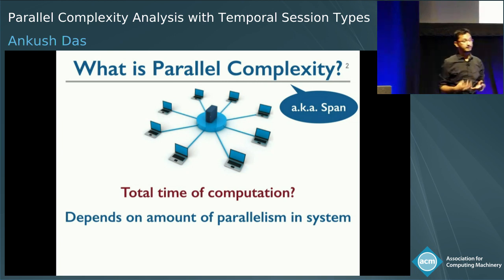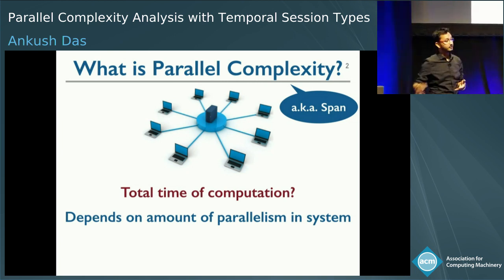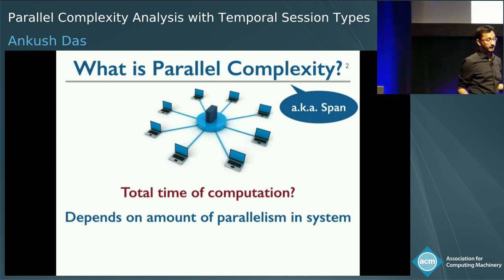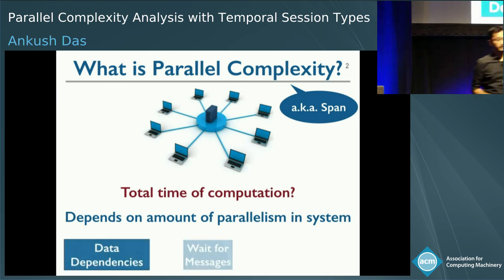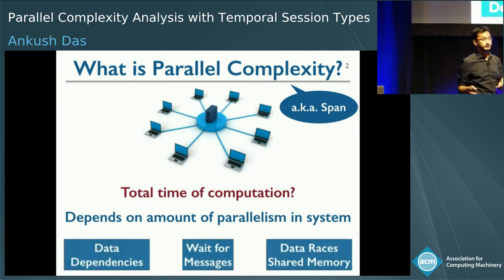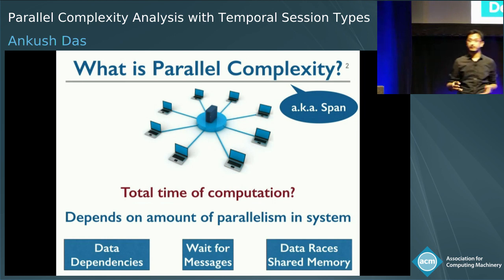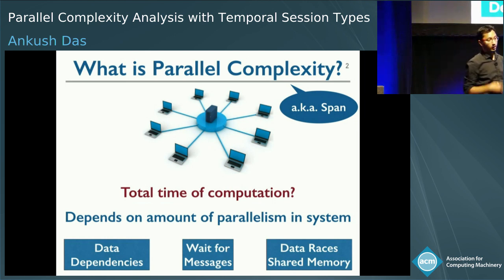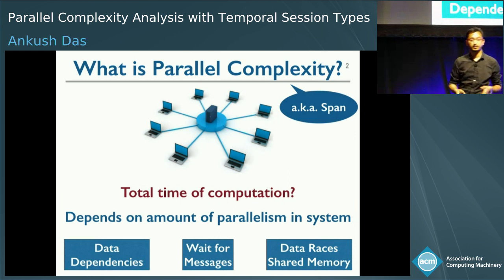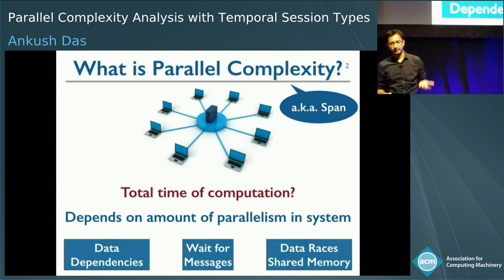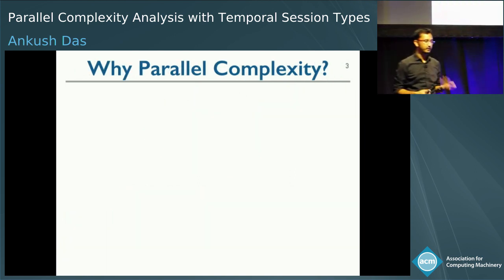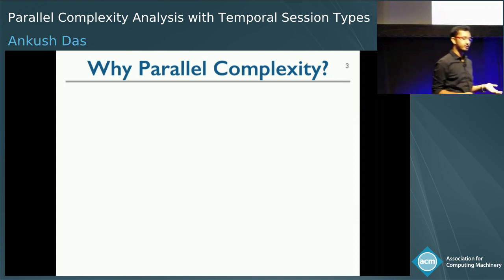This question doesn't have a fixed answer — it depends on how much parallelism there is in the system. The more the parallelism, the less the execution time. The amount of parallelism depends on how much data dependency there is: do processes need to wait for messages from other processes, or are there data races due to shared memory? So the next question is: why are we interested in parallel complexity in the first place?